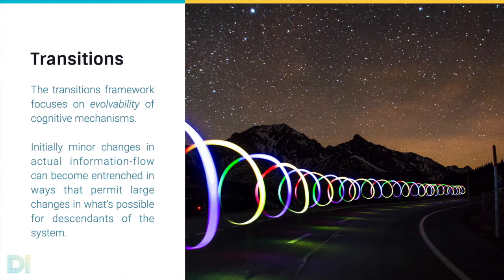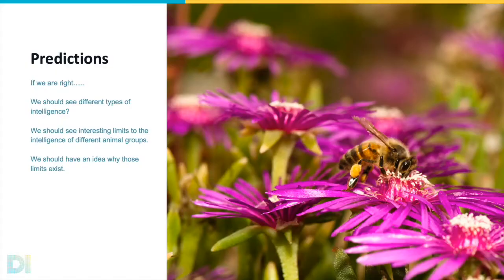So what are the experiments and what are we actually doing? In terms of the experiments proposed and what we have underway, if our transitions framework is right, we should be able to make some decent predictions. If we are seeing a transitional model, we should see different types of intelligence, and we should see interesting limits to the intelligences of different animal groups, and we should be able to propose why those specific limits should exist.